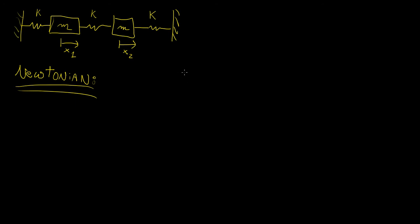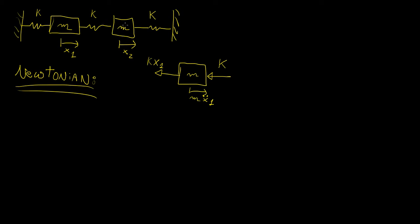We're going to draw two free body diagrams. For mass 1, if it is moving to the right, it has two springs on each side. One spring is going to be pulling it backwards — that's KX1. The other spring is also a restoring force, so it gives K times some displacement. Notice that the compression or elongation of the middle spring depends on both masses — this mass moving towards the left would compress it further. So we have to account for the fact that this spring is not independent of the second mass.